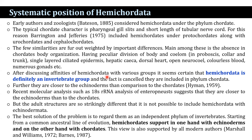After discussing affinities of Hemichordata with various groups, it seems certain that Hemichordata is definitely an invertebrate group, and the fact that they were included in phylum Chordata is cancelled. They are closer to the echinoderms than to chordates, as per Hyman (1959), and recent molecular analysis such as 18S rRNA analysis also suggests they are closer to echinoderms. Both adult structures are so strikingly different that it is not possible to include Hemichordata with Echinodermata. The best solution is to regard them as an independent phylum of invertebrates — phylum Hemichordata itself. Starting from a common ancestor, the line of evolution of Hemichordata connects on one hand with echinoderms and on the other hand with chordates. This view is also supported by modern authors such as Markel and Williams (1972) and Barnes (1987).